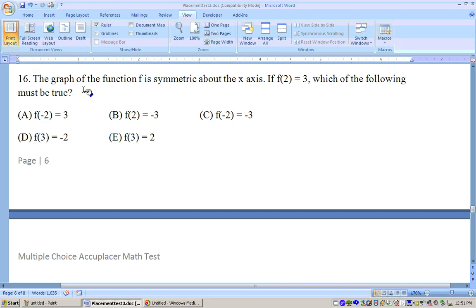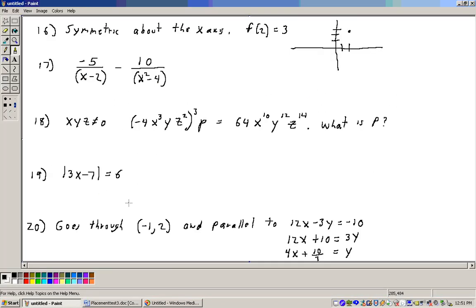Problem 16 says, the graph of the function f is symmetric about the x-axis. If f of 2 equals 3, which of the following must be true? Let's take a look at what's going on here. Symmetric about the axis, f of 2 equals 3. That means we have a point at the coordinates 2, 3. So over 2, up 3.